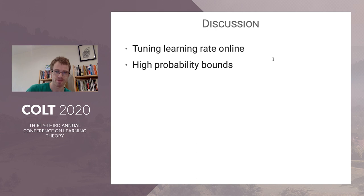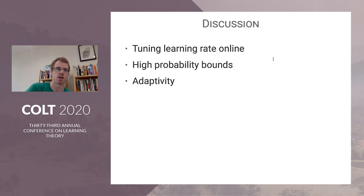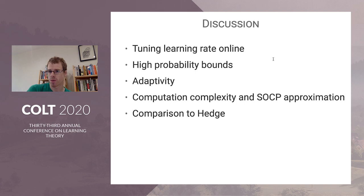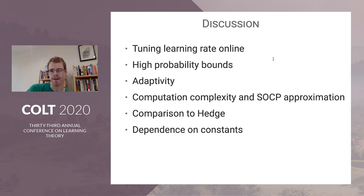We show how to use this technique to get high probability bounds. The algorithm is adaptive: if the value of the optimization problem is small for the actual choices the adversary makes, you get a better bound. The algorithm is a convex program — specifically an exponential cone program, which is numerically not ideal — so we give a second-order cone program approximation with the same theoretical guarantees but much better numerically, solvable with standard solvers. Comparing to Hedge, if you apply it in the standard full information case it's a little different — it shifts the losses and gets a slightly adaptive bound as a consequence.